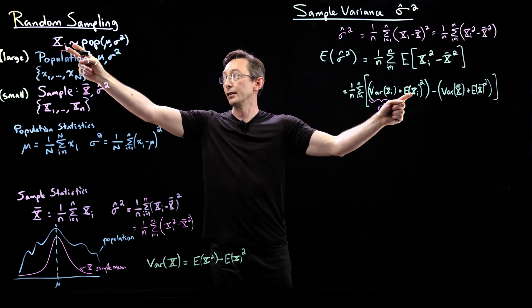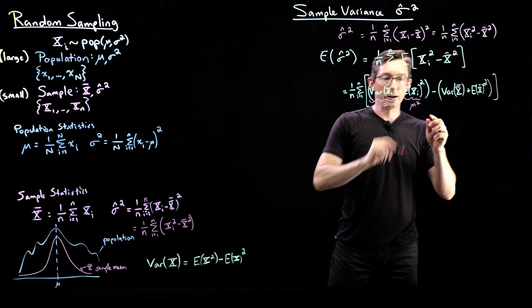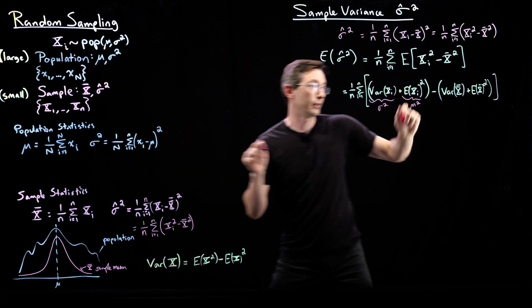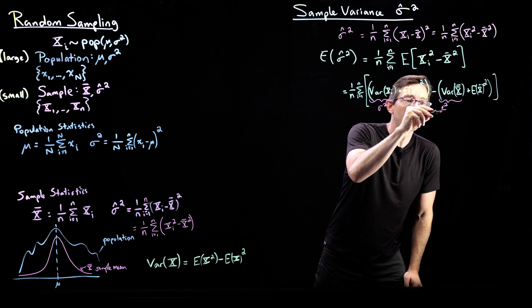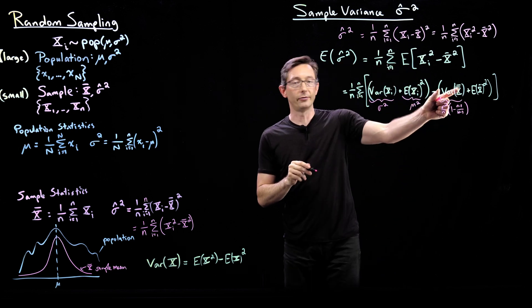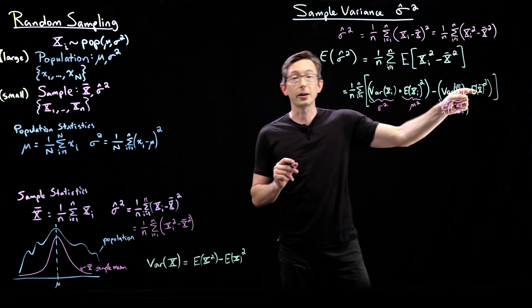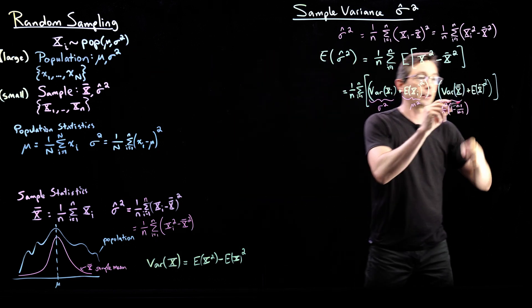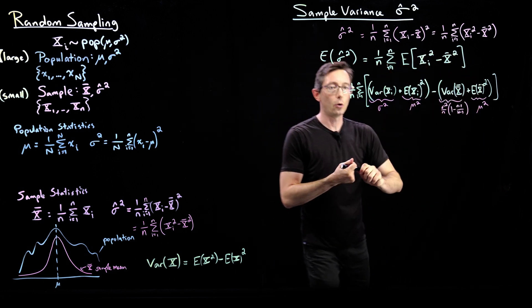The expected value of any x_i is mu, so (E[x_i])² = mu squared. The variance of x-bar, for finite big N, is sigma squared over little n times the correction factor (1 minus (little n minus 1) over (big N minus 1)). And the expected value of x-bar is mu, so (E[x-bar])² is also mu squared.